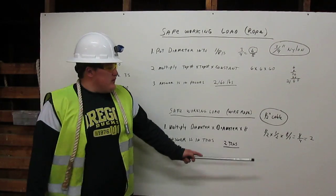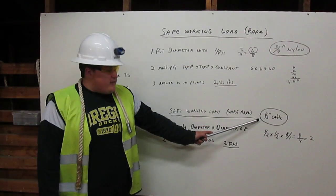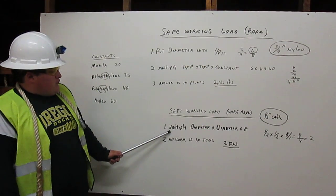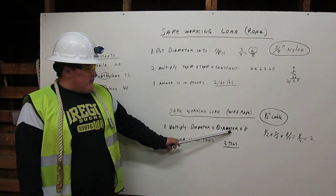In our example, we will be using a half inch cable. First, you multiply the diameter times the diameter times eight.